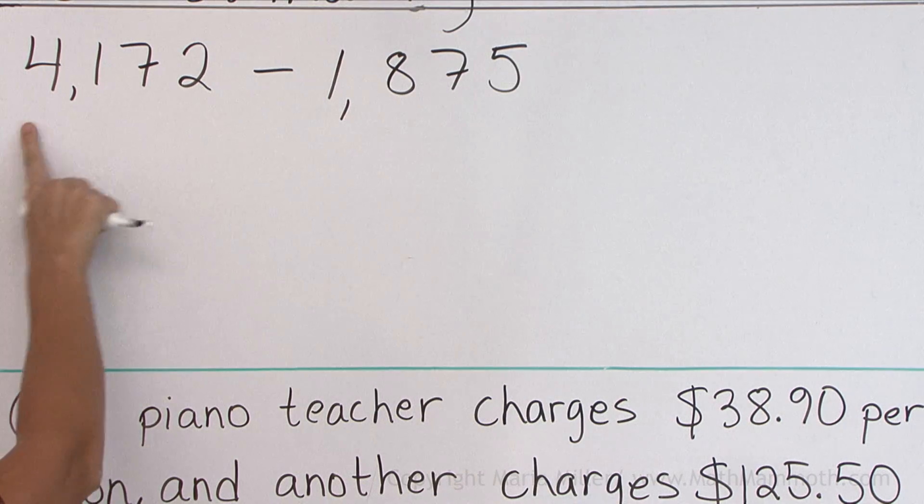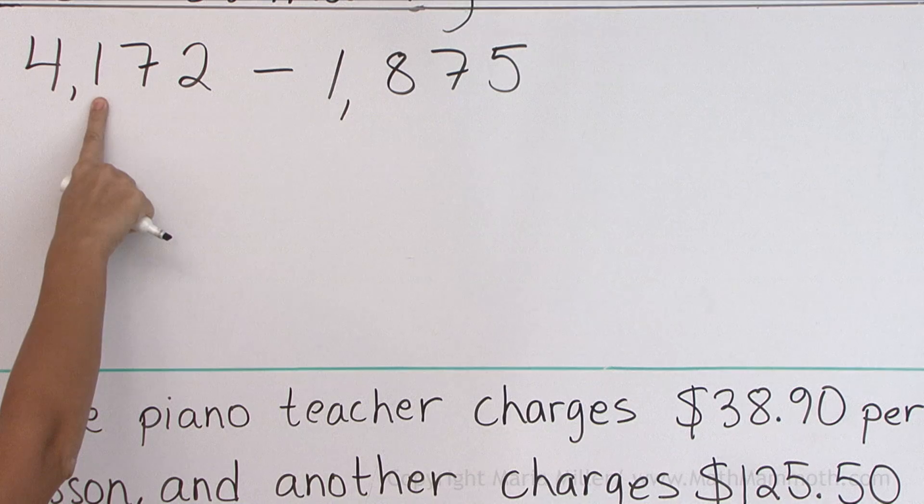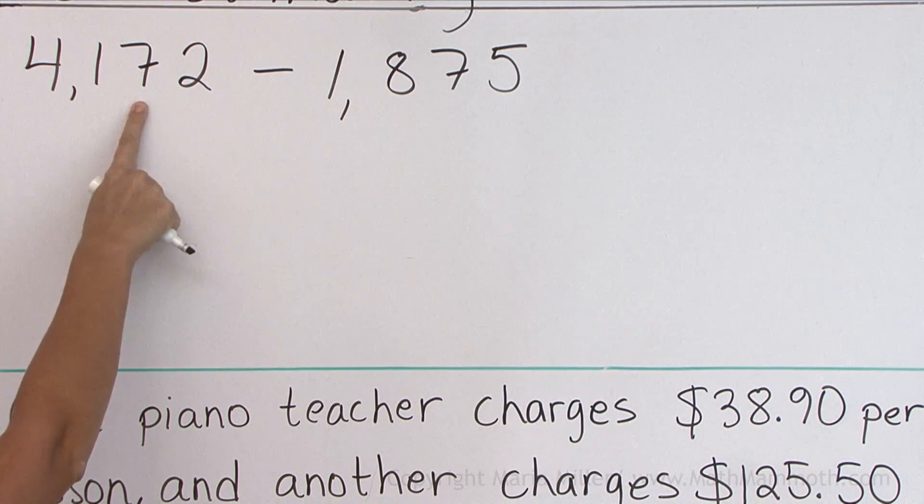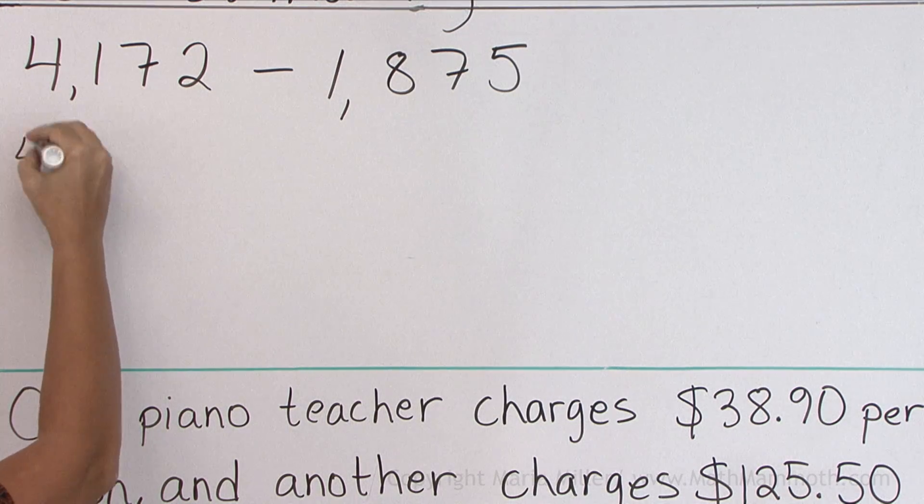So if I round this to the nearest hundred, here's the hundred's digit, here's seven, it means I round up. I get four thousand, two hundred.